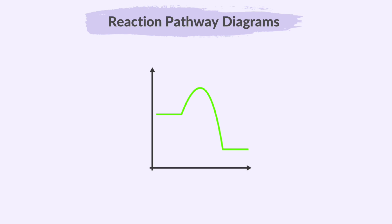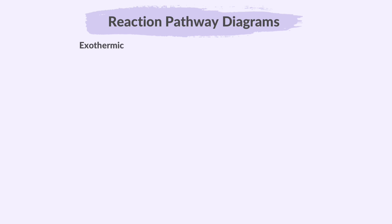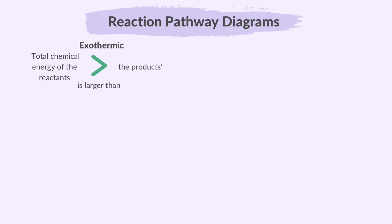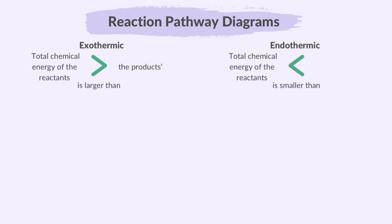A reaction pathway diagram, also known as an energy level diagram, shows the energies of both the reactants and final products in chemical reactions. An exothermic reaction occurs when the total chemical energy of the reactants is more than that of the products, resulting in the transfer of this energy difference to the surroundings in the form of heat. An endothermic reaction occurs when the chemical energy of the reactants is less than that of the products, causing the transfer of this energy difference from the surroundings to the chemicals involved, so heat is absorbed from the surroundings.